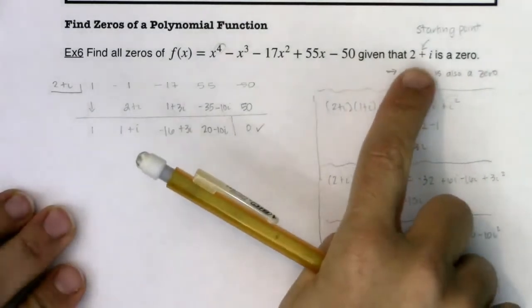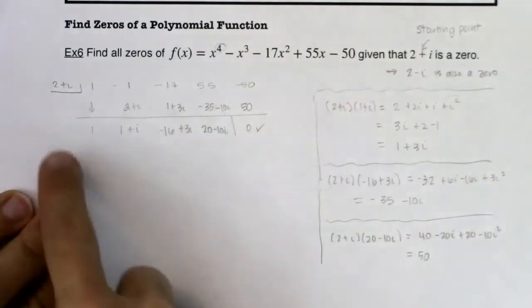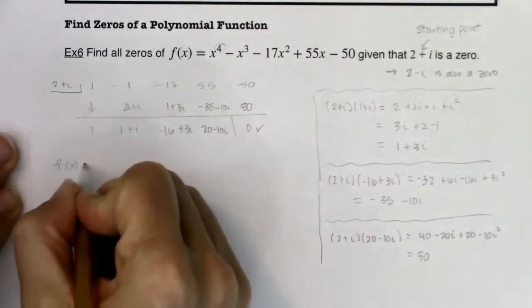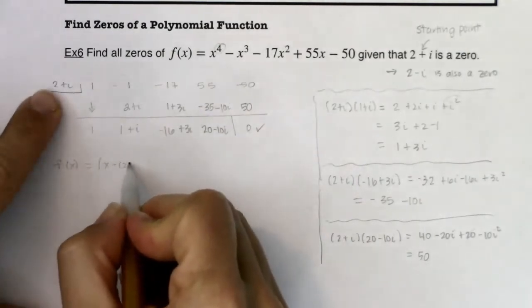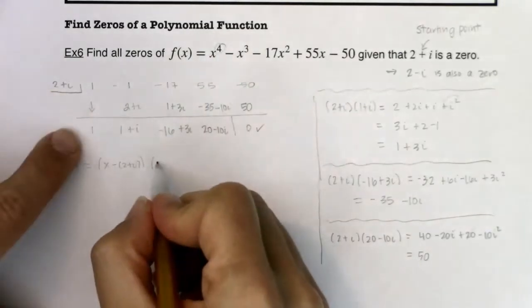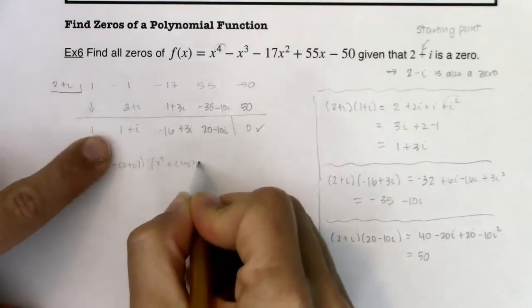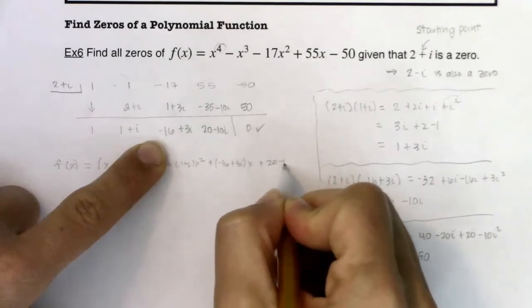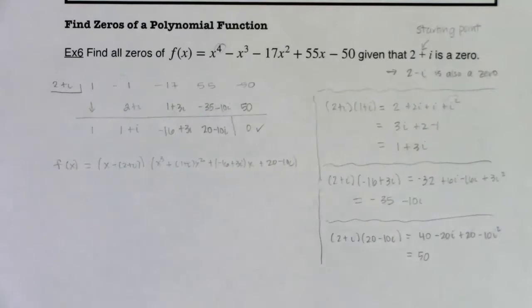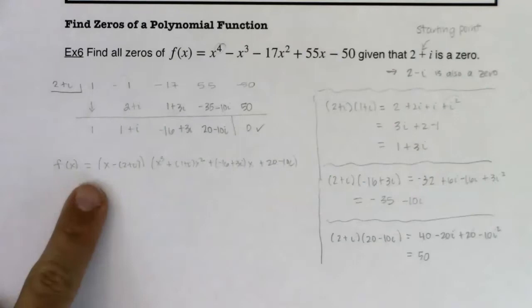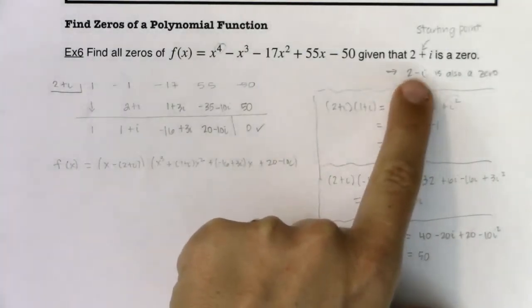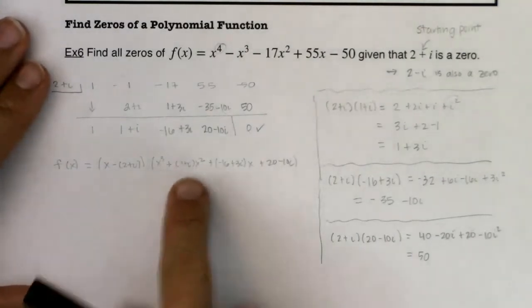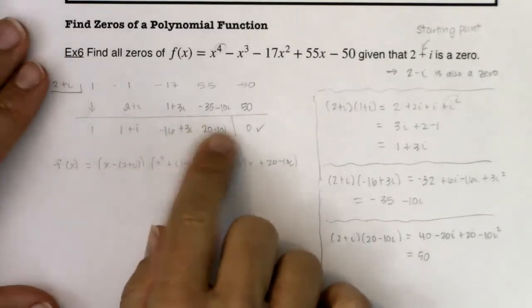At this point, I know two plus i is a zero, and I also know two minus i is a zero. If you wanted to factor this, you could say this is x minus (two plus i), and then you'd have a cubic left: x cubed plus (one plus i)x squared plus (negative 16 plus 3i)x plus (20 minus 10i). But that's pretty ugly and it's not worth it just yet. I'm going to hold off because I still have one more zero to use via synthetic division before I start trying to factor. These coefficients are ugly because you have these i's in here.